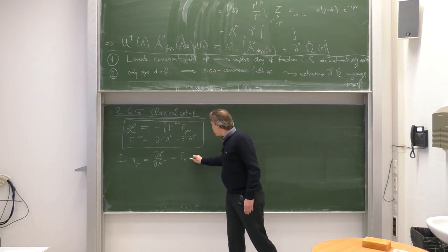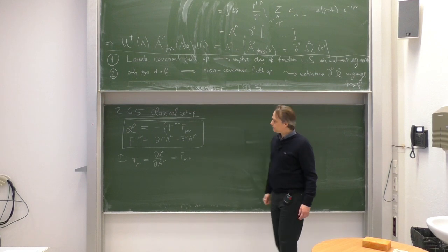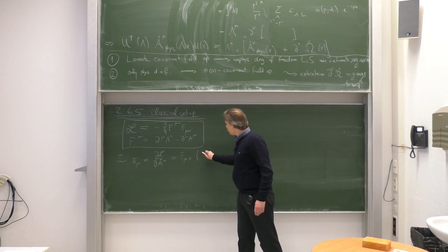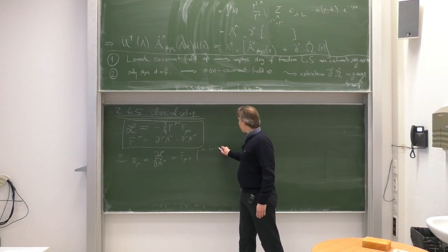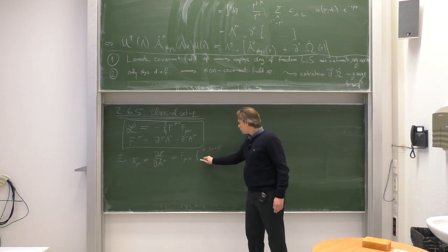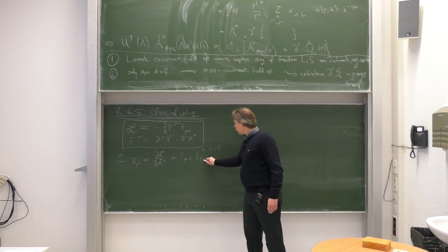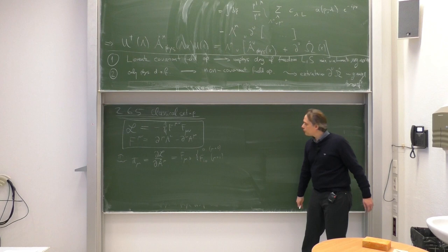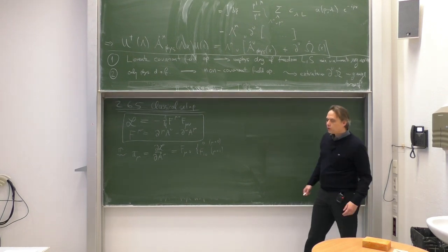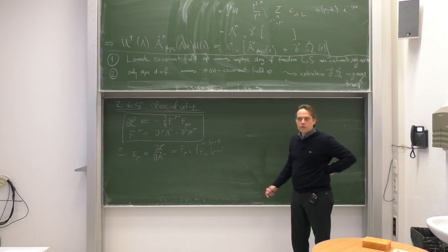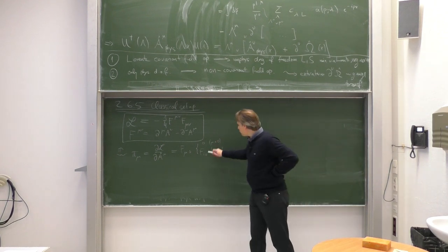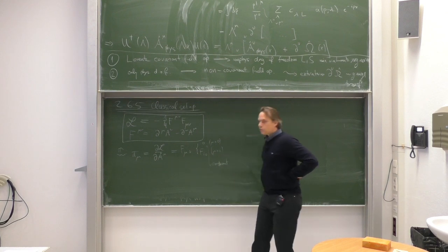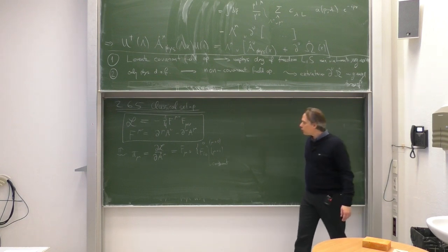Pi mu is defined as the derivative of the Lagrangian with respect to A mu dot. That is the same as in the massive case, because the mass does not play a role in the definition of the canonical momenta. The result is F mu 0, the field strength tensor, with its index structure. So again, this is 0 for mu equals 0, and F i 0 in the other cases. The canonical momentum pi 0 identically vanishes, which is of course a constraint. We had the same constraint in the massive case.